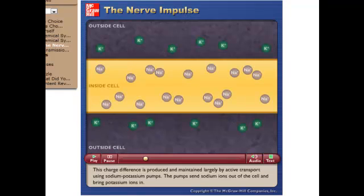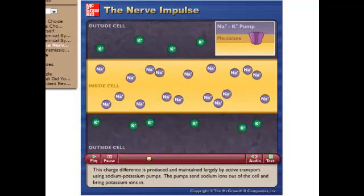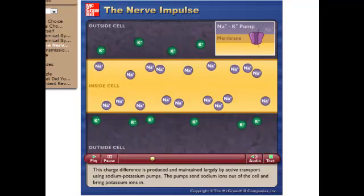This charge difference is produced and maintained largely by active transport using sodium-potassium pumps. The pumps send sodium ions out of the cell and bring potassium ions in.